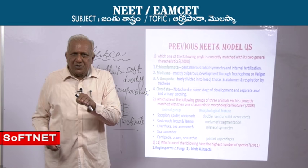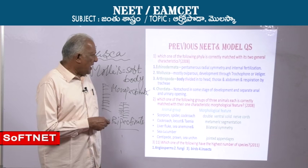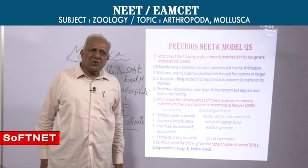Before we conclude — Arthropoda: body divided into head, thorax and abdomen; respiration by trachea. No doubt you find trachea, but not in all arthropods. Trachea as organs of respiration is only in insects.